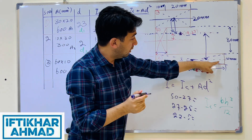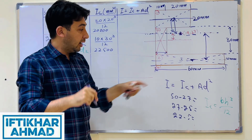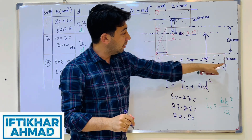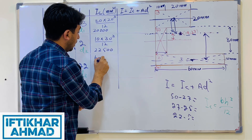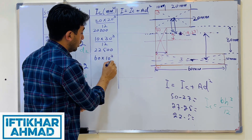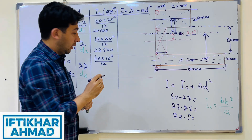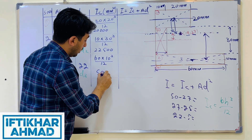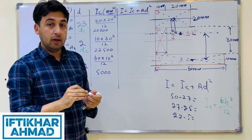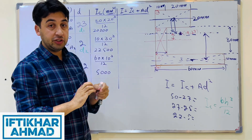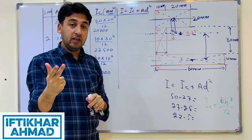For shape 3: IC3 = 60 × 10³ / 12 = 5,000 mm⁴. The unit for moment of inertia is mm⁴. We now have IC1, IC2, and IC3.